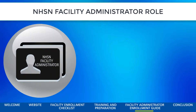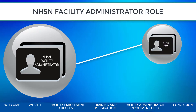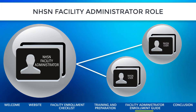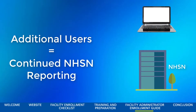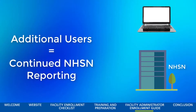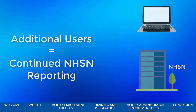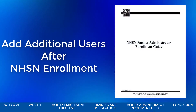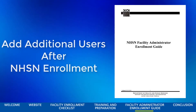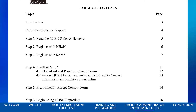Once your facility is enrolled in NHSN, it is strongly recommended that a second person and even a third person be added to your facility as NHSN users. If the Primary Facility Administrator is not available for any reason, the backup NHSN user can continue with the NHSN reporting work. You can add additional users after your facility is enrolled in NHSN, and the Facility Administrator Enrollment Guide outlines the steps needed to perform these tasks. Please take some time to review this enrollment document.